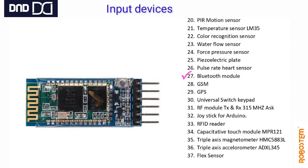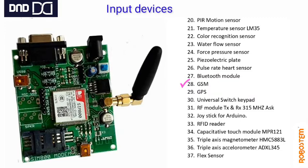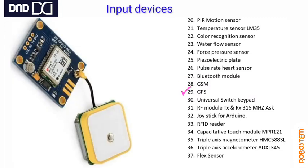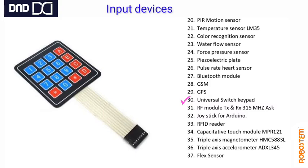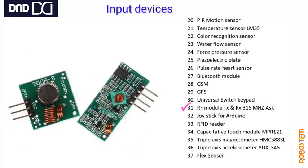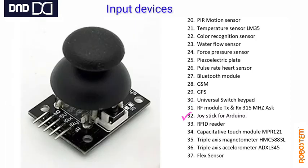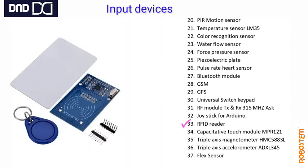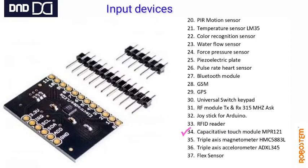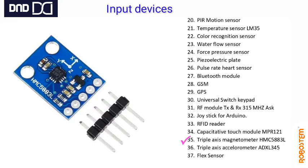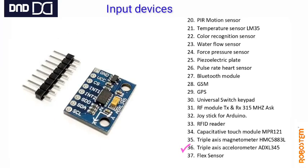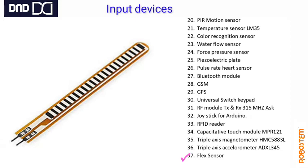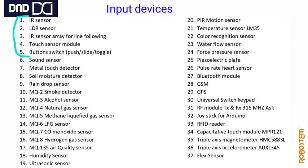This is a pulse rate sensor that senses heartbeat pulses. Bluetooth module is also an input device used for connections. GSM module — put your SIM card in it and it acts as a mobile. GPS gives the global positioning of your device. Universal switch keypad is used in most locking systems. RF module RX and TX together make one sensor. This is a joystick — you may have seen it in mobile games. This is an RFID reader — you may have seen it at petrol bunks. Capacity touch module is used for different purposes. Triple axis magnetometer and accelerometer — both are in your mobile, which is why we can play games. The last one is a flex sensor, which is a kind of resistor.